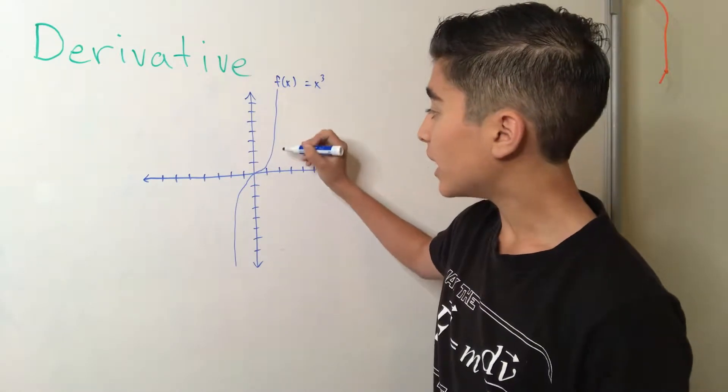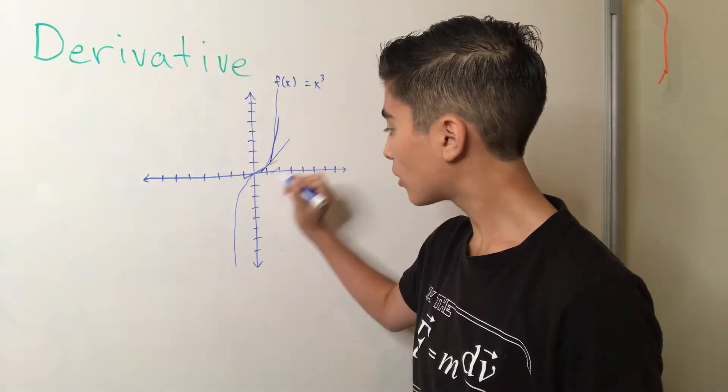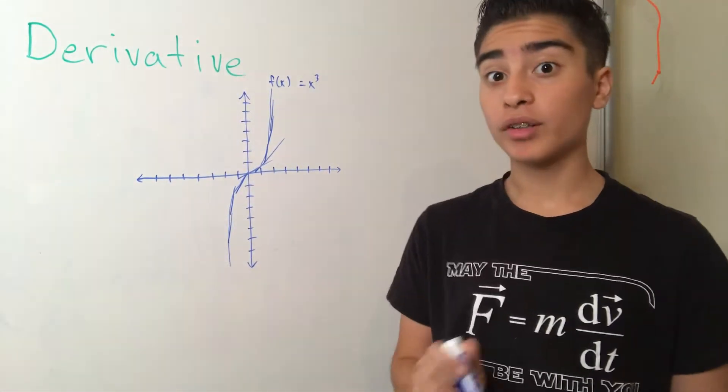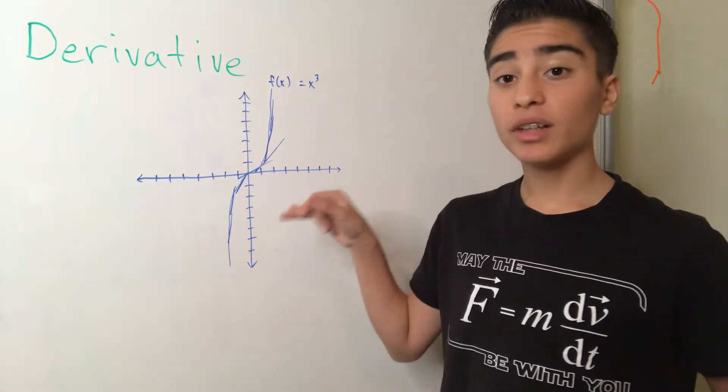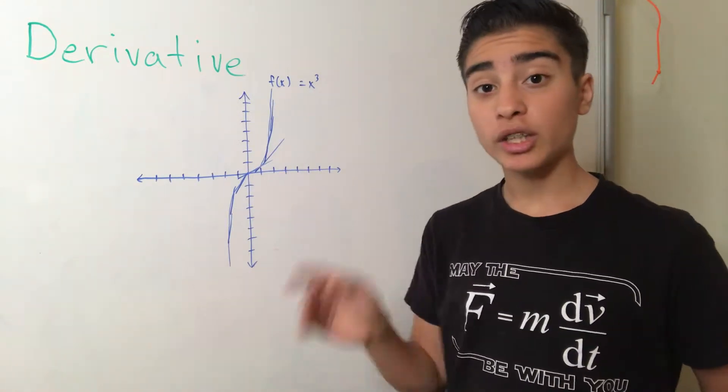Let's say we take lines that touch every single point on this graph. Alright, these are just a few of the infinite number of points used on this graph. So what do these lines do? Well, each of these lines tells us how fast and in what direction the graph is changing at that very point.